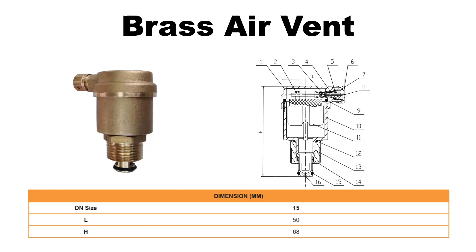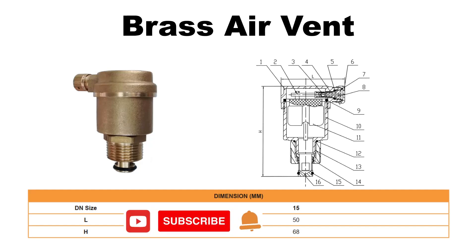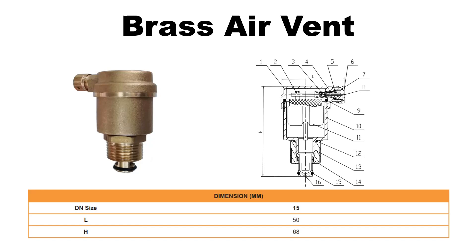Hello everyone. Today I would like to show you how to create a DN15mm brass air vent Revit family. I will refer to those dimensions in the picture to create the parameters. Before going to Revit, I would like to request that you subscribe to the channel and click the notification bell for the next video. Let's go to Revit.